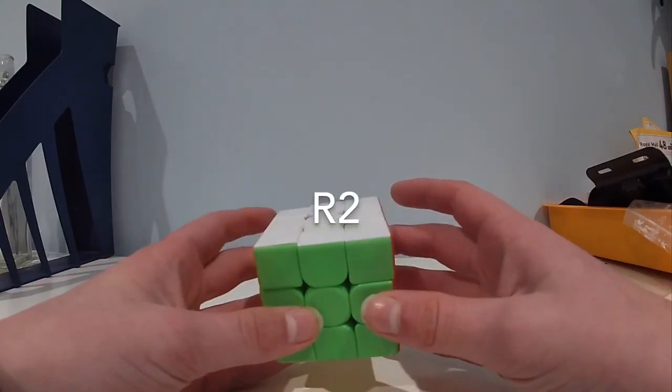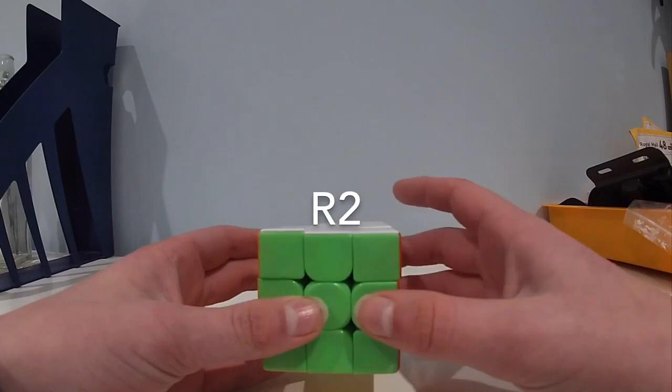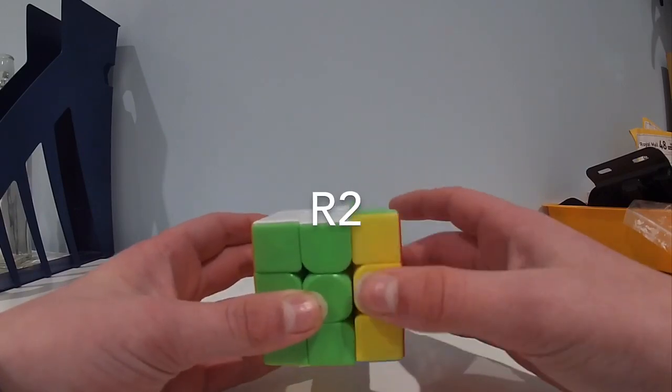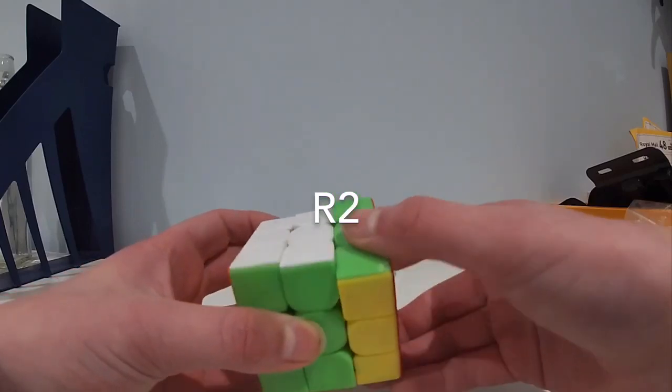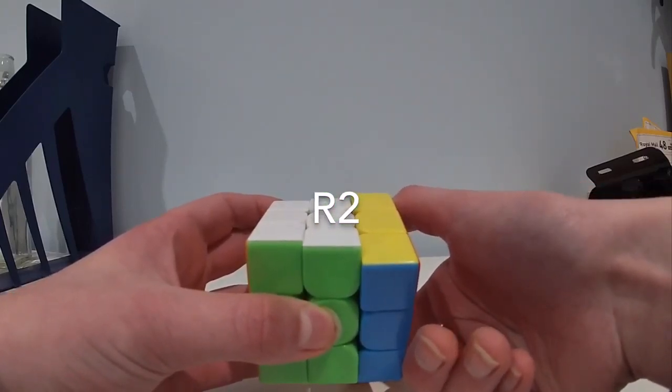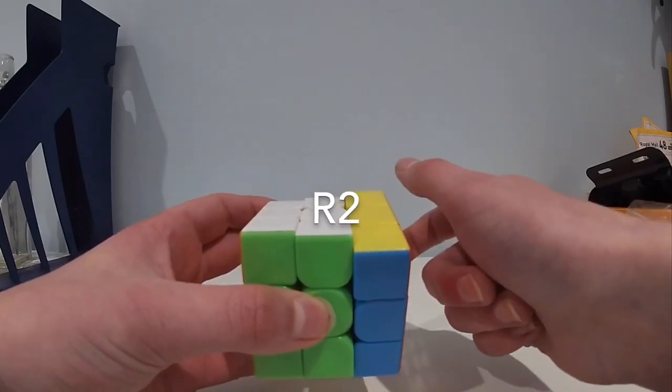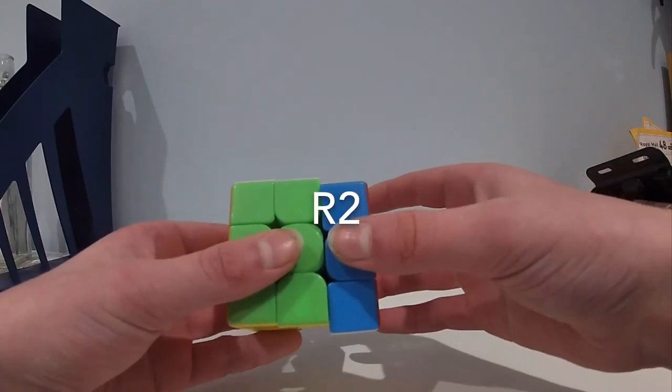Another important finger trick is being able to do R2 and L2 without re-gripping in the middle. You could turn your wrist fully but that puts it in quite an uncomfortable position and it's awkward and also leaves you to re-grip for home grip.